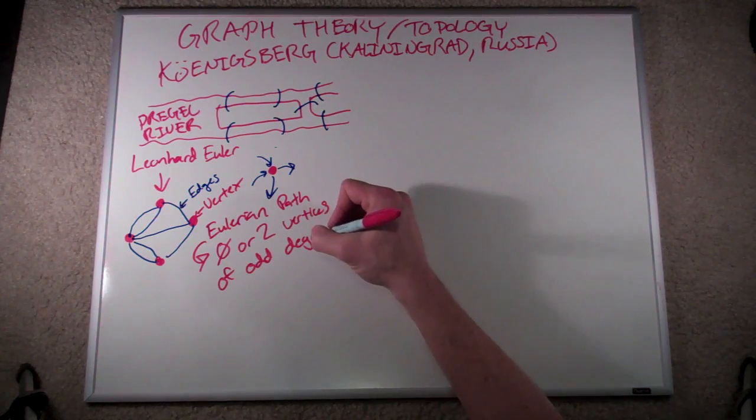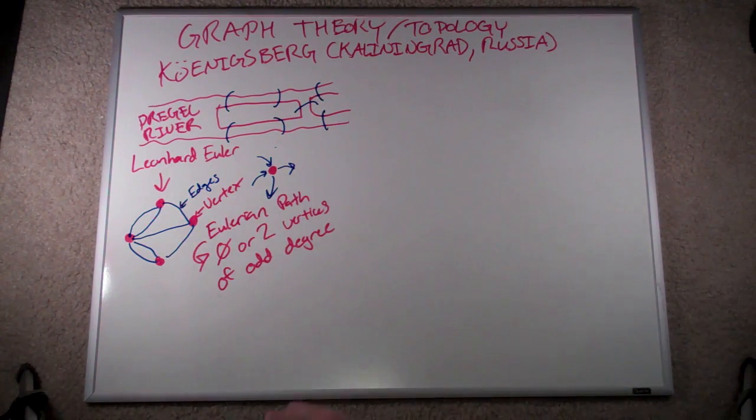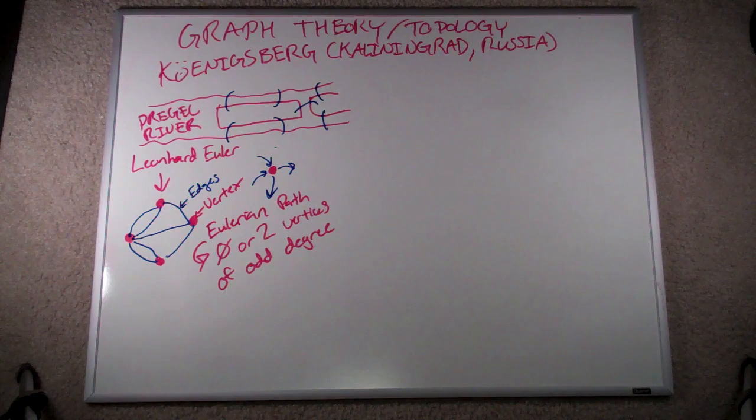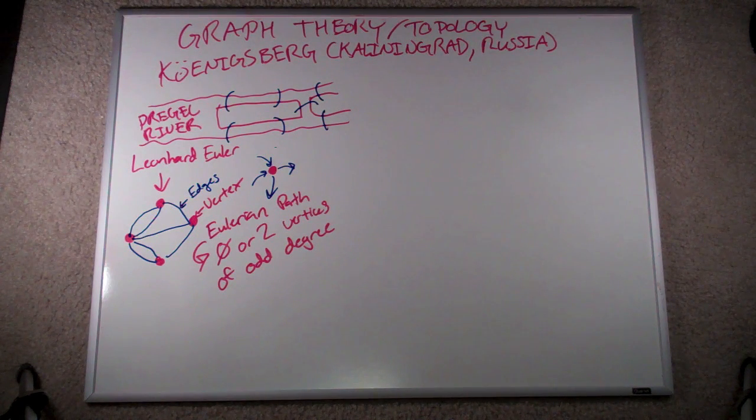In fact, if there are two of them, it means that one of those points is your beginning point and one is the end point. Needless to say, there is no Eulerian path that goes through the seven bridges of Königsberg.